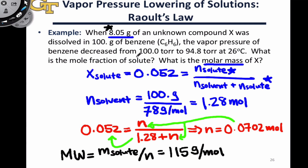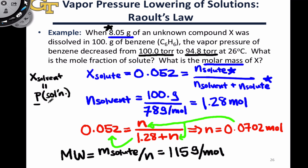Let's briefly review what we did to get to this point. The key first step was to use the given vapor pressures for the pure solvent and the solution to set up a ratio equal to the mole fraction of the solvent — namely, the ratio of the solution vapor pressure to the pure solvent vapor pressure. From there, using the idea that the mole fraction of solute is 1 minus the mole fraction of solvent, we could obtain the mole fraction of solute.